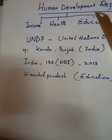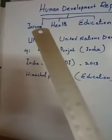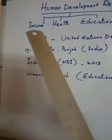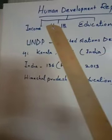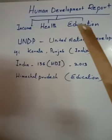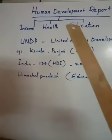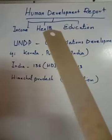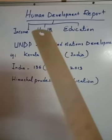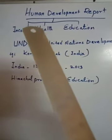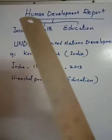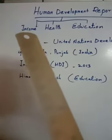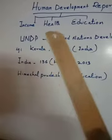If any country has good conditions in income, health, and education, that country is in a higher quality and higher position. So if you measure any information like the Human Development Report, you should get the information from income, health, and education.